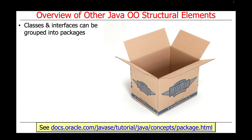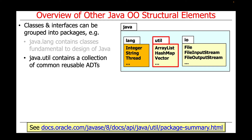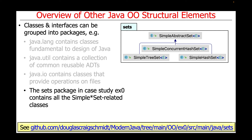Classes and interfaces can be grouped into an organizing construct called a package. For example, the JavaLang package contains classes fundamental to Java's design, like Integer, String, and Thread. The JavaUtil package contains common reusable abstract data types like ArrayList, HashMap, and Vector. The JavaIO package contains classes that provide operations on files, such as FileInputStream, FileOutputStream, and the File class itself. You can also define your own custom packages — for example, the Sets package in our EX0 case study contains all the simple set-related classes we'll be walking through in the next part of the lesson.